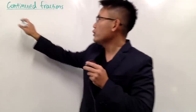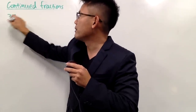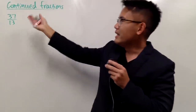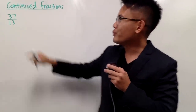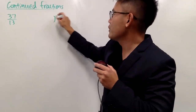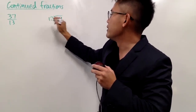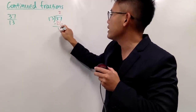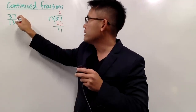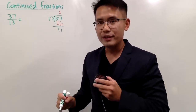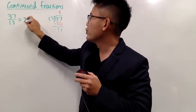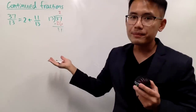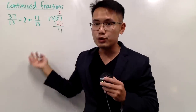Let me first show you — let's say we have a rational number 37 over 13. Of course, this is an improper fraction; we have a bigger number on top, so we can go ahead and divide 37 by 13. We need a 2, put a 26, subtract, you get 11. In other words, we can write this as 2 and 11 over 13, meaning 2 plus 11 over 13.